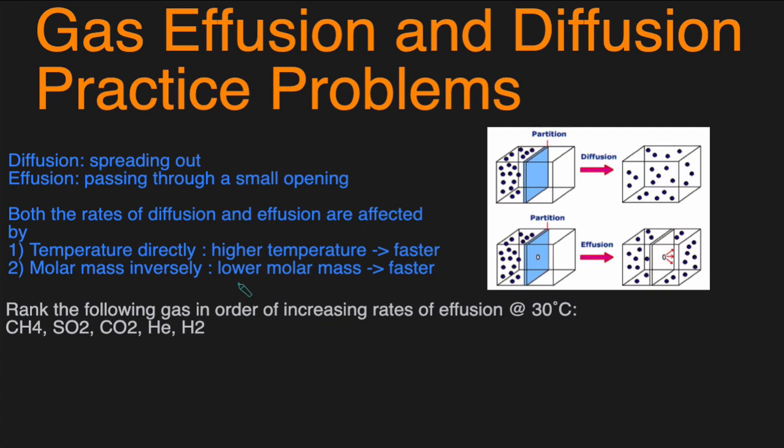Now let's get started with our example problems. The first one: rank the following gases in order of increasing rate of effusion at 30 degrees Celsius. Well, there are two factors that affect the rate: the temperature and the molar mass. The temperature is constant. All the gases are at 30 degrees Celsius. So we just have to look at the molar mass, because the rate of effusion is inversely related to the molar mass.